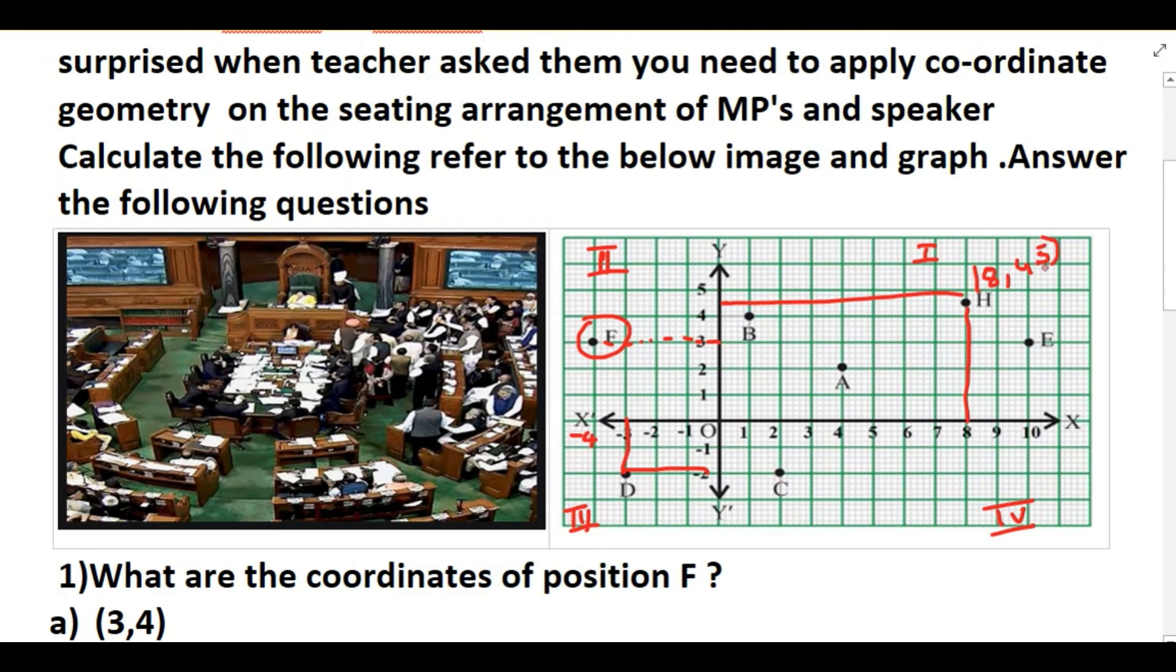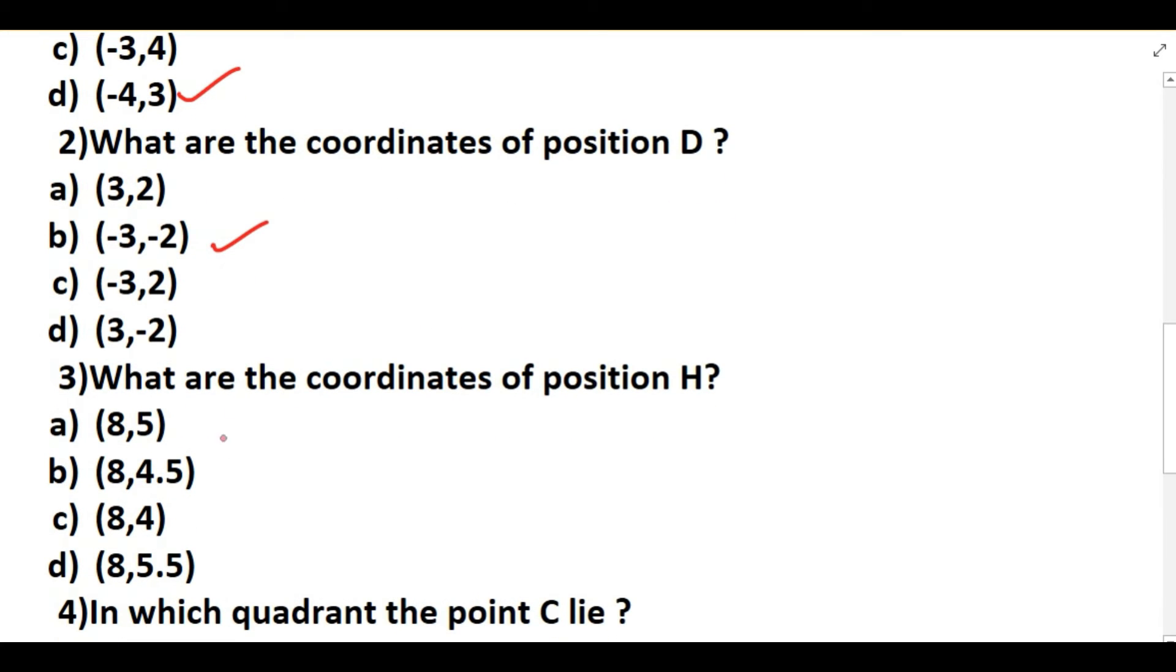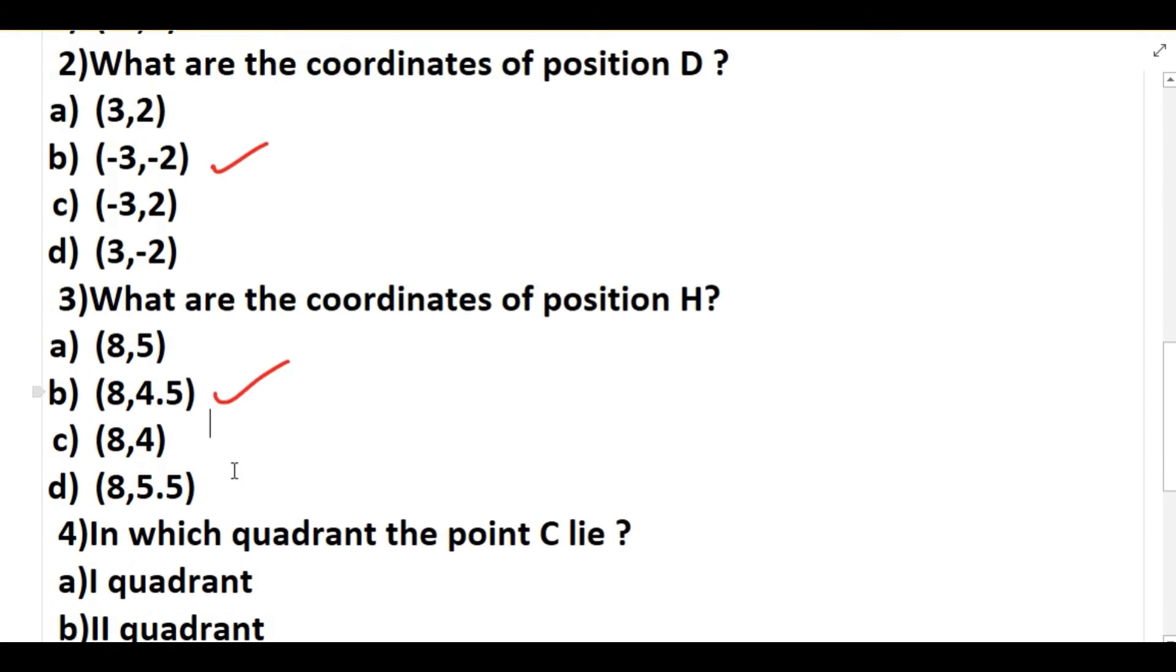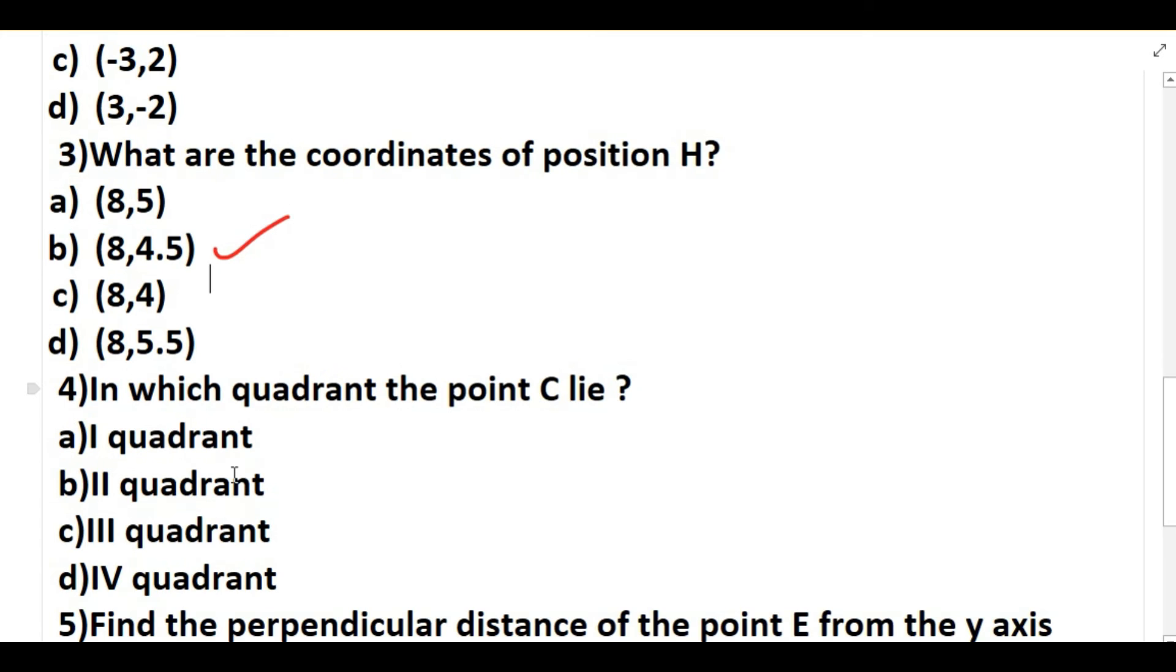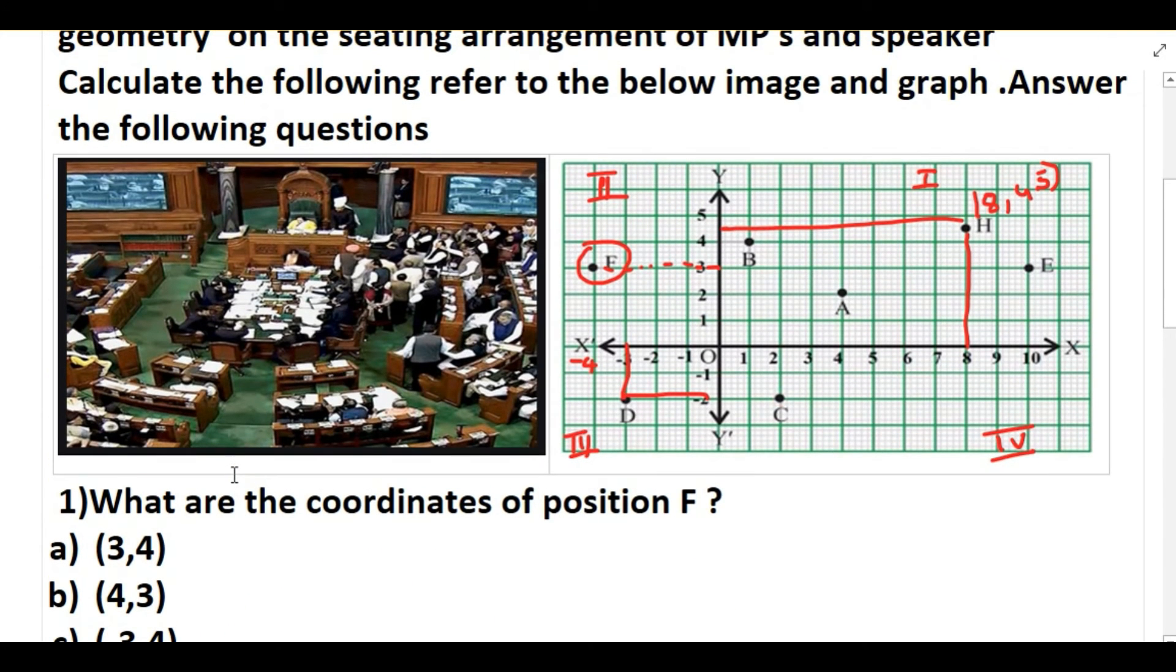8, 4.5. Let's see whether the value is there in the graph. 8, 4.5. Next question, in which quadrant the point C lies? So first we will find out the point C. So C lies in the fourth quadrant.